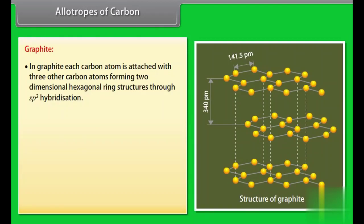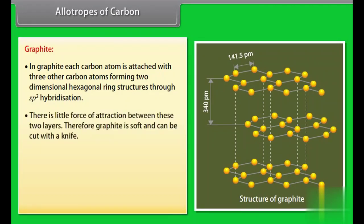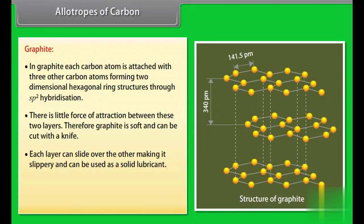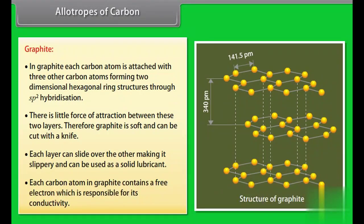Allotropes of carbon. Graphite. In graphite, each carbon atom is attached with three other carbon atoms forming two-dimensional hexagonal ring structures through sp2 hybridization. There is a little force of attraction between these two layers. Therefore, graphite is soft and can be cut with a knife. Each layer can slide over the other making it slippery and can be used as solid lubricant. Each carbon atom in graphite contains a free electron which is responsible for its conductivity.